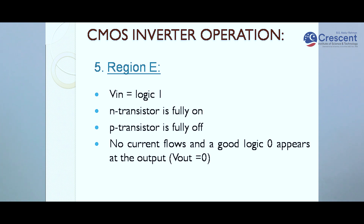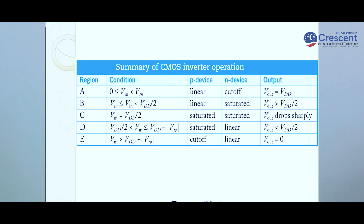In region E, VIN equals logic one. The N transistor is fully on and the P transistor is fully off, so again no current flows and a logic zero appears at the output. Since the N transistor's source is connected to ground, the output terminal is drained toward ground and VOUT equals zero.